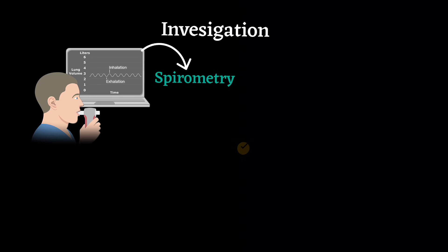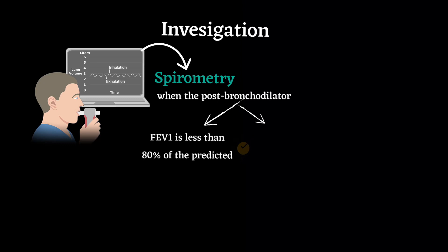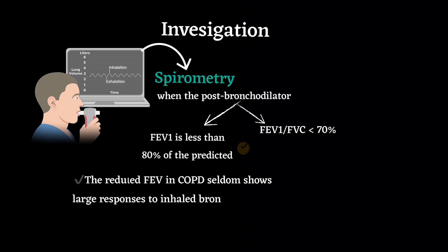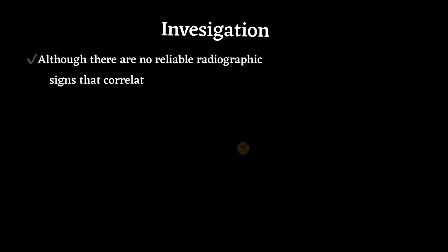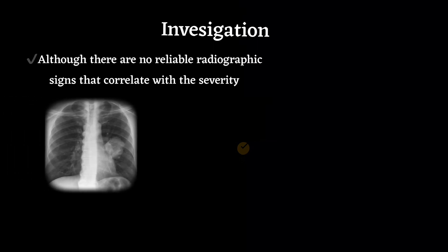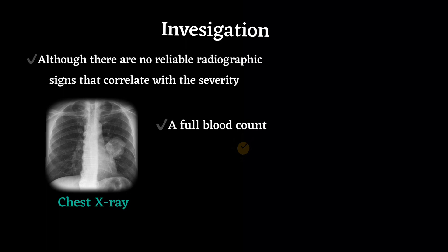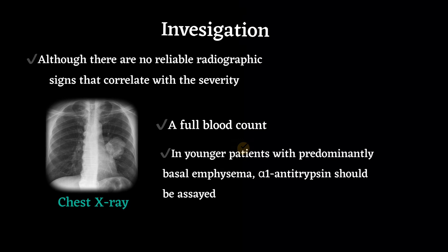Diagnosis is established when post-bronchodilator FEV1 is less than 80 percent of the predicted value, accompanied by an FEV1/FVC ratio of less than 70 percent. The reduced FEV1 in COPD seldom shows a large response to inhaled bronchodilators. Although there are no reliable radiographic signs correlating with severity of airflow limitation, chest X-ray is essential to identify alternative diagnoses such as cardiac failure, other complications of smoking such as lung cancer, and the presence of bullae. A full blood count is useful to exclude anemia, and in younger patients with predominantly basal emphysema, alpha-1 antitrypsin should be assessed.